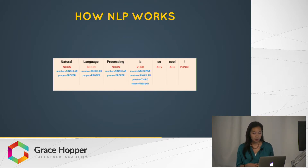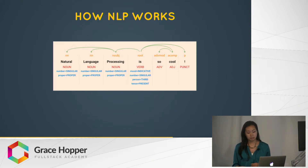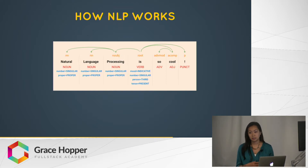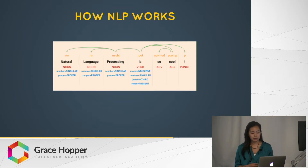This is where the machine figures out if a word is a noun, what tense it's in, etc. Once that's completed, the machine determines the syntactic relationships between the words, finding the root, subject, and object of the sentence. So following this process, a machine can then incorporate the remaining steps of natural language understanding, determine the actual meaning of the sentence, and possibly perform something like sentiment analysis to determine that the speaker of this statement views NLP positively.